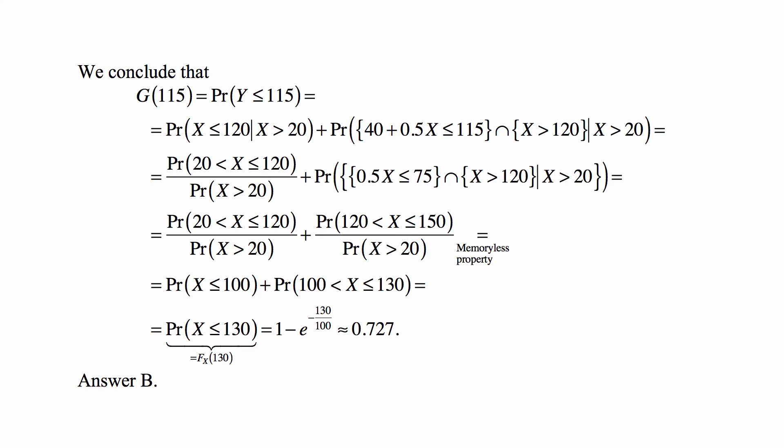Adding these two probabilities together gives simply the probability that x is less than or equal to 130 — the cumulative distribution function of x at 130. Given a hazard rate of 1 over 100 and mean 100, that's 1 minus e to the minus 130 over 100, or 1 minus e to the minus 1.3, which is approximately 0.727 — answer B.